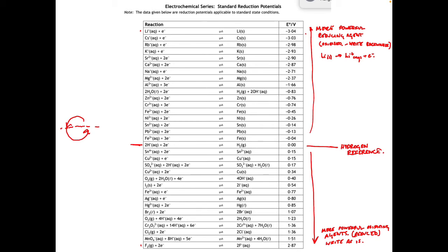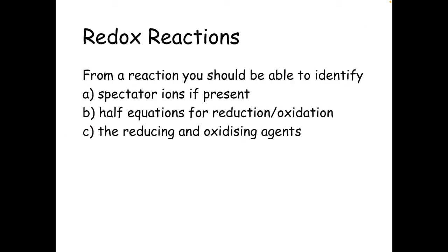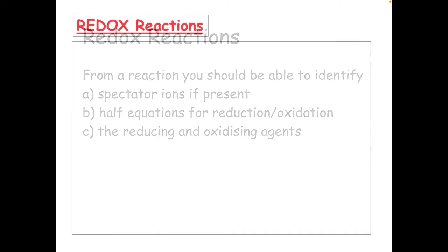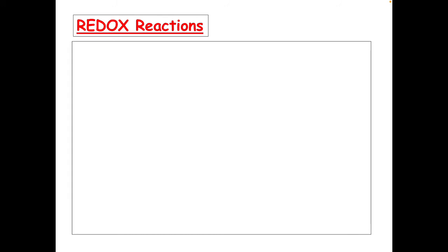Once it clicks, it does make things simpler. We're going to do a few questions now. From a redox reaction you should be able to identify spectator ions if present, strip those away, write the half equations for reduction and oxidation, and identify the reducing and oxidising agents. Let's go through an example — aluminium and iron oxide — working out which one's been oxidised, which one's been reduced, and then writing those equations out.